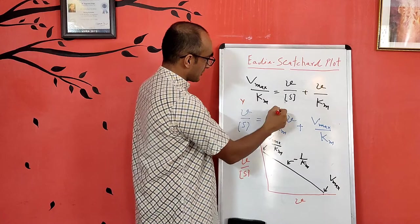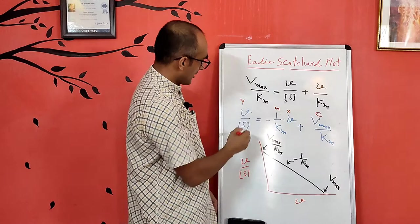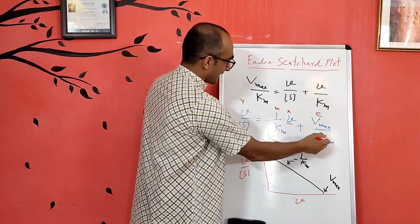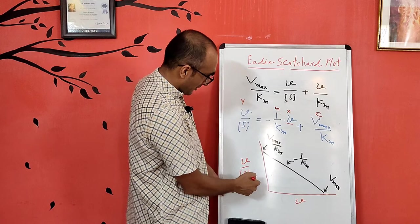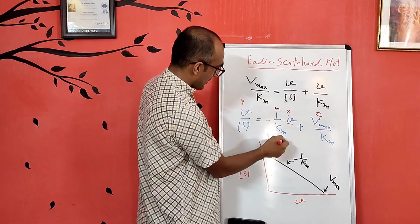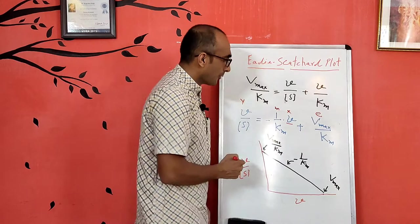This means if you plot v/S on the y-axis and v on the x-axis, it gives a straight line. The intercept on the y-axis is equal to Vmax/Km, and the intercept on the x-axis is equal to Vmax. From this plot you can derive more accurate values of Vmax and Km.